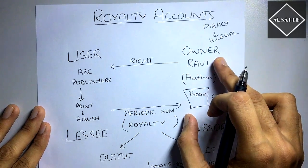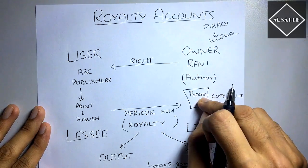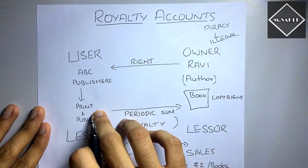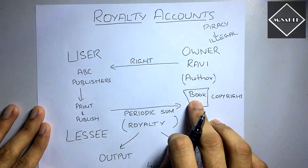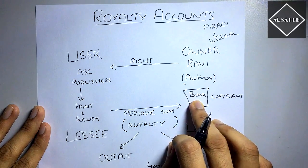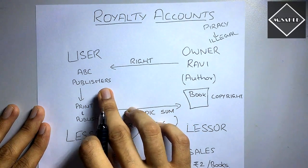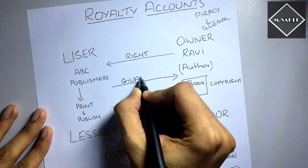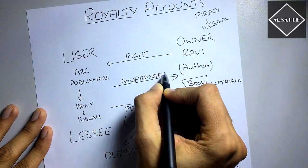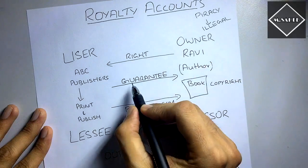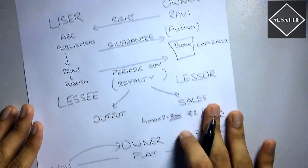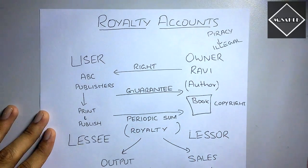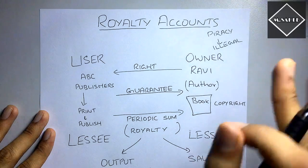But Ravi will say: I have put years of hard work into this book. I've finished my job. But if you fail at your marketing, then I don't want to suffer. So now ABC Publishers says: don't worry, we are going to give you a guarantee. If the sales are not good, don't worry, we are going to pay you a fixed minimum amount no matter what happens. We are giving you this guarantee that we are going to pay you some fixed minimum.